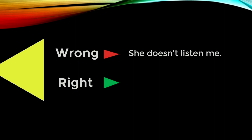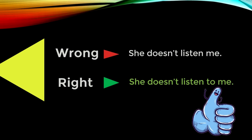'She doesn't listen me' — 'listen' is an intransitive verb, meaning it doesn't take a direct object without a preposition. The 'to' is necessary to introduce a complement of the verb, or you can consider 'listen to' as a phrasal verb. The correct sentence is: 'She doesn't listen to me.'